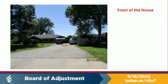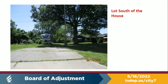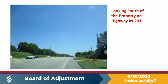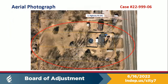This is looking at the house and the neighbor's house. This is looking at the south part of the lot where the driveway will access the garage. This is looking from Sunset, looking northwest toward the property. And this is looking from M291, looking back toward 23rd Street to the south from adjacent to the property. No phone calls were received about this. That concludes the presentation.